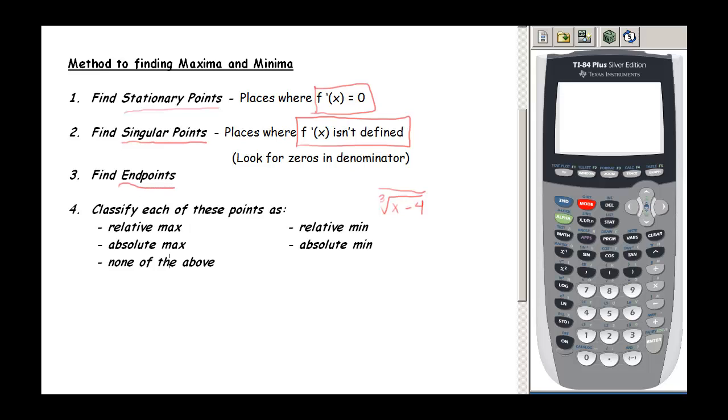Then we're going to look at those endpoints. Those are given to us usually. And once we have all of our different possibilities for places to have a maxima or a minima, then we are going to classify each point as either a relative max, a relative min, an absolute max, an absolute min, or maybe it doesn't qualify as any of those. Maybe it's a stationary point but it isn't a max or a min. Maybe it's just a pause on the way up.